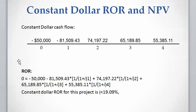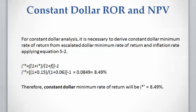This gives us the constant dollar cash flow. We write the rate of return equation, solve for i, and calculate the constant dollar rate of return as 19.09%. Now, an important question for the NPV calculation: what rate should be used for constant dollar NPV? We know the escalated dollar minimum rate of return is 15%, but we cannot use that rate for constant dollar NPV calculations.